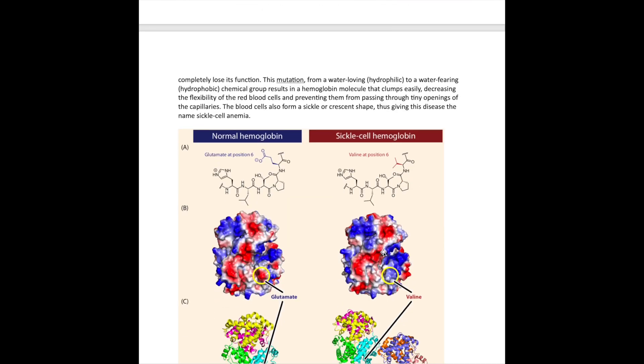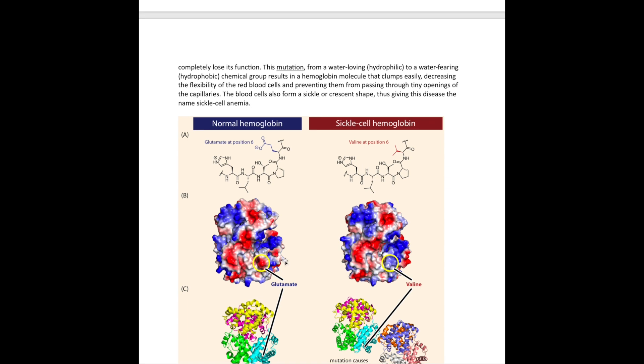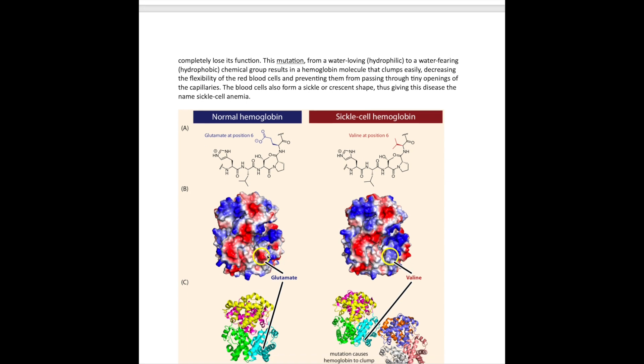However, if we look at that three-dimensional picture again of the molecule, this is now color-coded where blue means that part of the molecule is non-polar, whereas red means that part is polar. Here's the mutation. Originally, that part of the hemoglobin molecule is what we call hydrophilic or water-loving or polar.